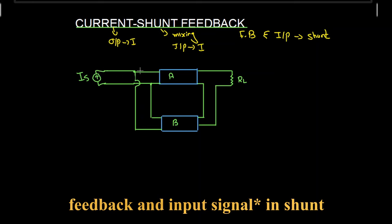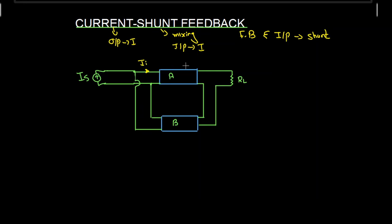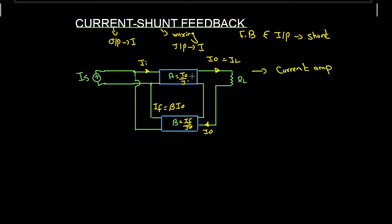The input signal is a current signal; suppose current II is flowing into this amplifier. At the output side we also have a current I0, which is equal to IL. This I0 feeds the feedback network, and the feedback signal is a current IF, equal to beta times I0. So beta equals IF divided by I0, and the gain A equals I0 divided by II. This current shunt feedback amplifier is also called a current amplifier because it amplifies current.